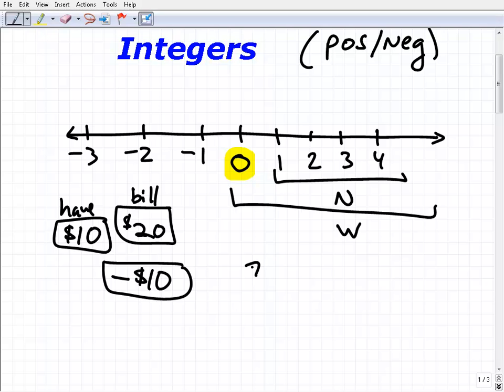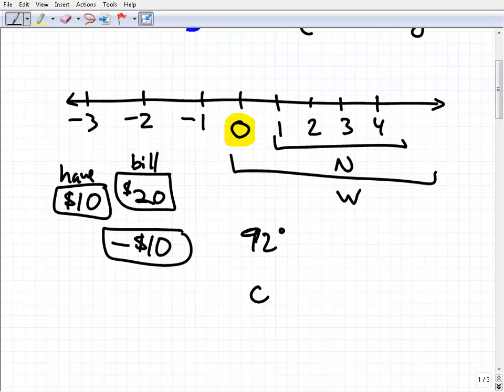It's like temperature, right? Go outside and it might be 92 degrees, and then as the weather starts changing, eventually it's super cold outside—it gets to zero. But guess what? It can go a lot colder than that, down to negative 15 degrees. This is another example of where negative numbers are used.